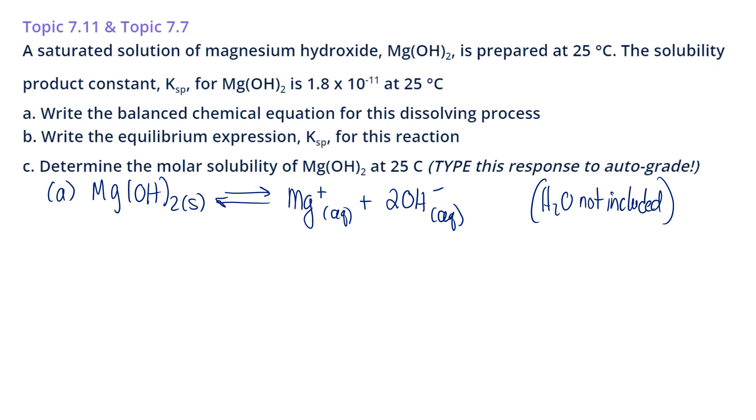All right, now I'm going to write my K expression for this reaction. So K expressions are products over reactants. Coefficients become exponents. So my hydroxide gets squared, and then I leave out solids and liquids. So I'm going to leave out my reactant because that's a pure solid.